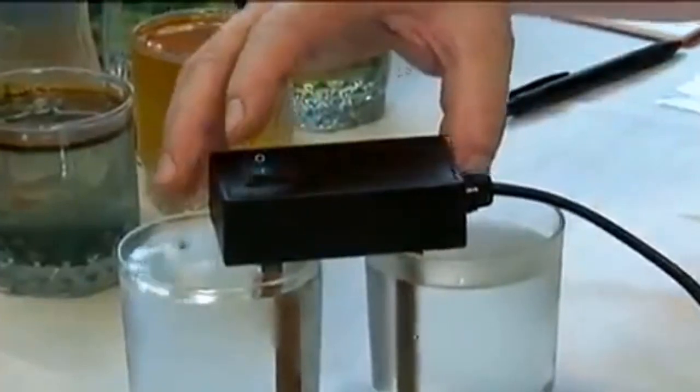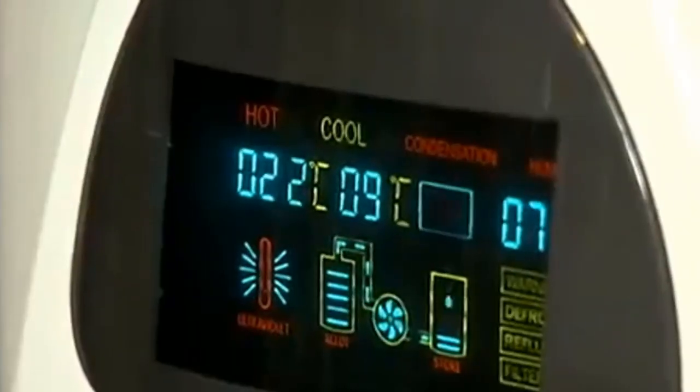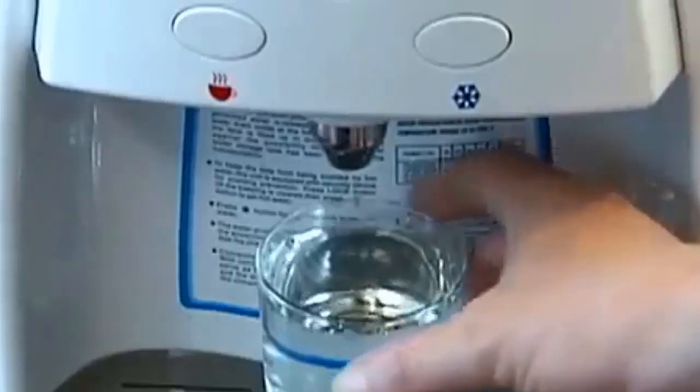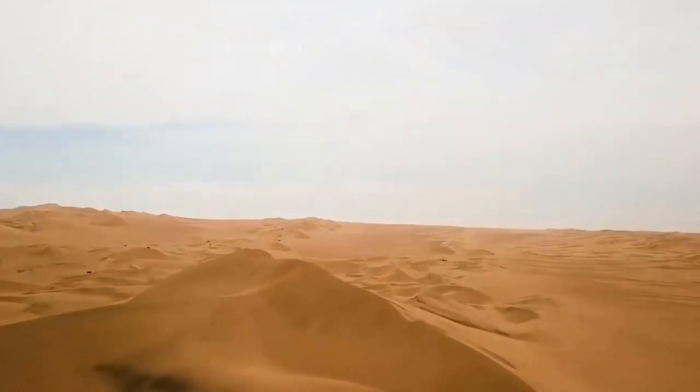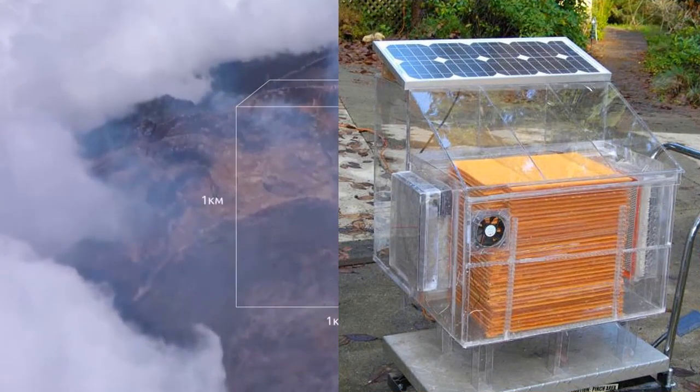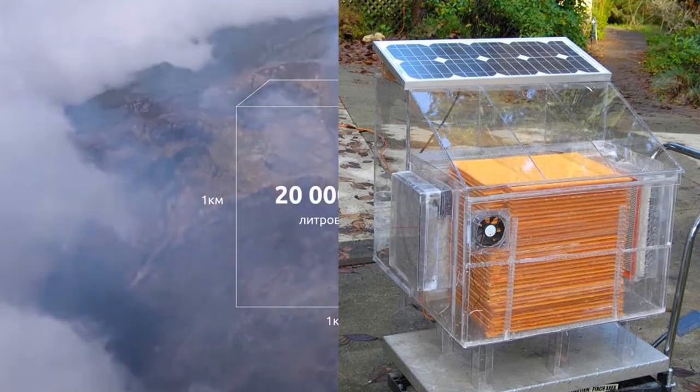Atmospheric water generators have gained attention as a potential solution for water scarcity, utilizing advanced technologies to extract moisture from the air and produce clean, drinkable water. However, one crucial aspect that needs consideration is the power consumption of these machines. In this essay, we will explore the power requirements of AWGs and examine different technologies and their associated power usage.